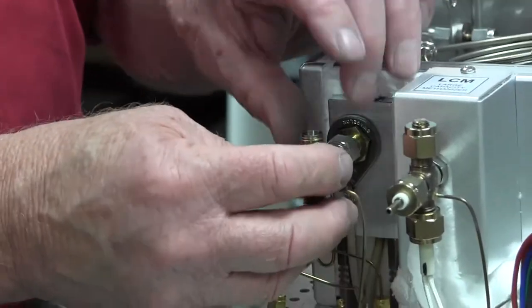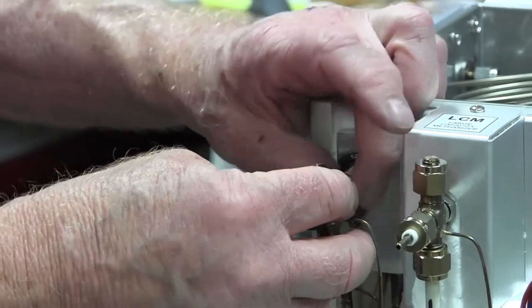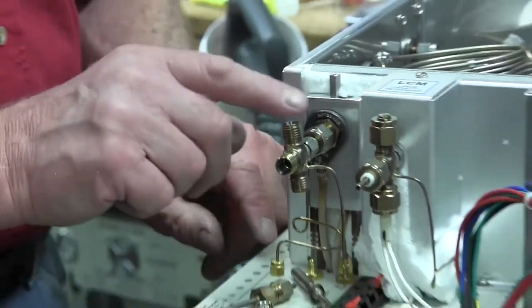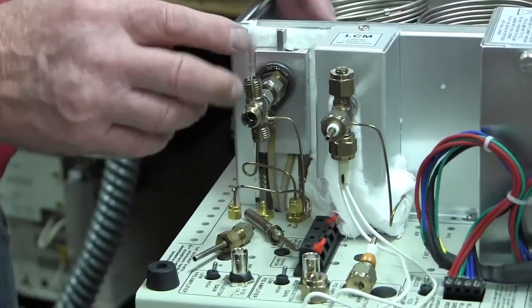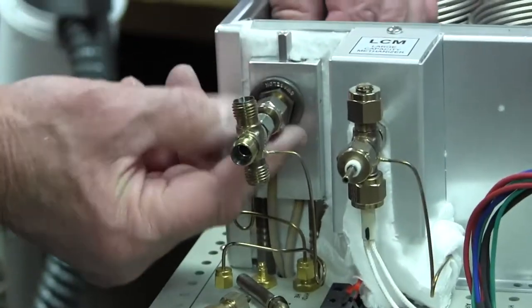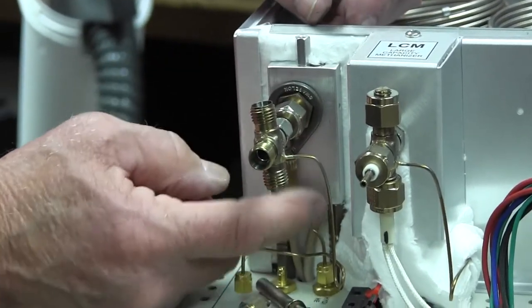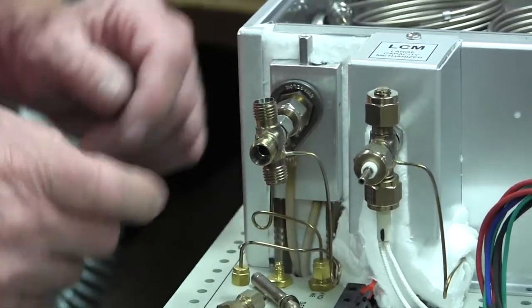When the methanizer is working perfectly, at 300 degrees is what we normally set the temperature of the methanizer tube. It's this aluminum block here that really heats that tube, so it's really the temperature of this aluminum block that you're setting.